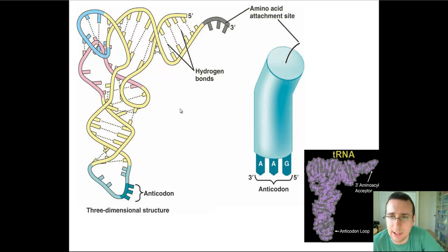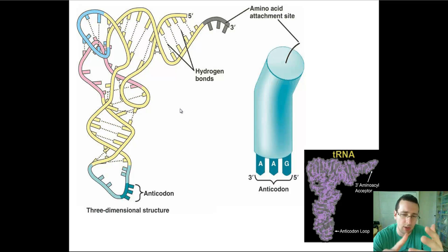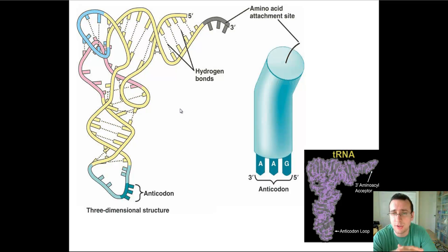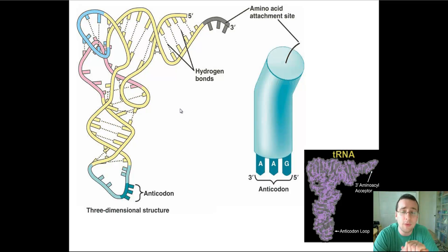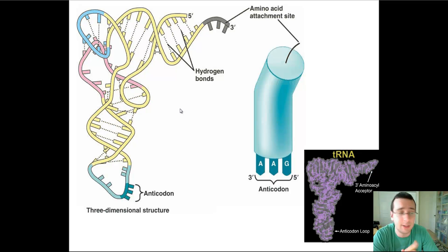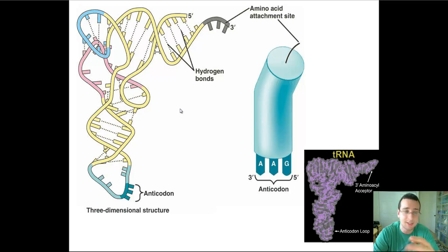We've been talking a lot about hydrogen bonds between DNA, base pairing rules, transfer RNA, and a lot of other structures including proteins that are maintained by hydrogen bonds. If you get rid of these hydrogen bonds, you've got a big problem. This is why when you heat something up — when you heat life forms up — they have problems. They denature all of these molecules, proteins, and nucleic acids alike.